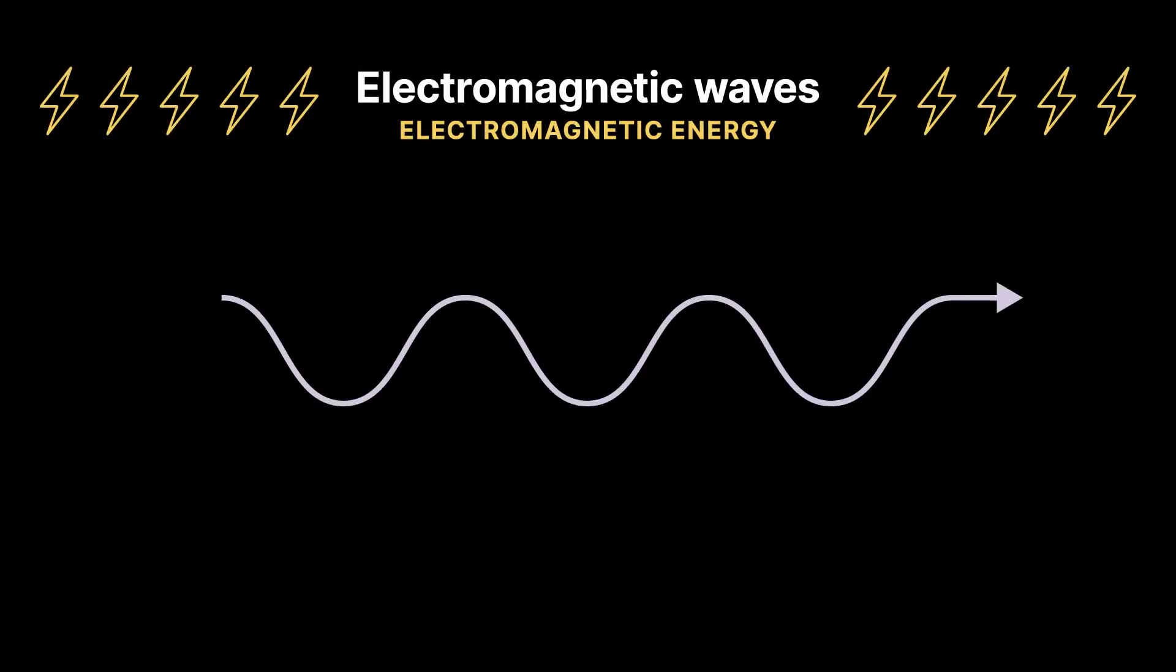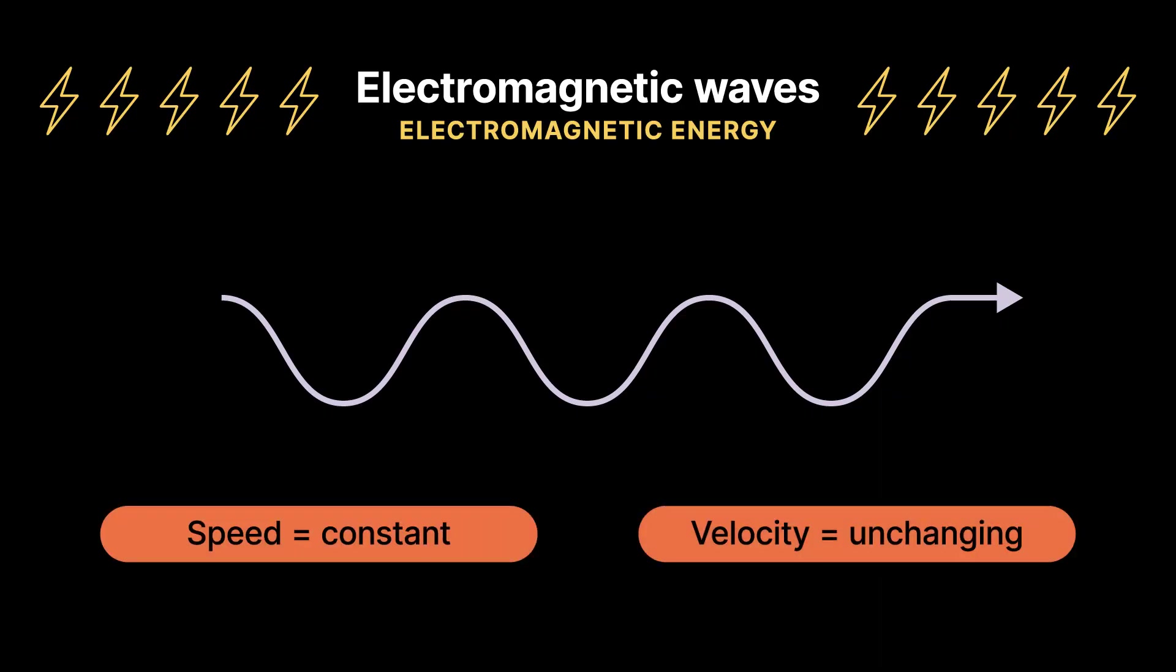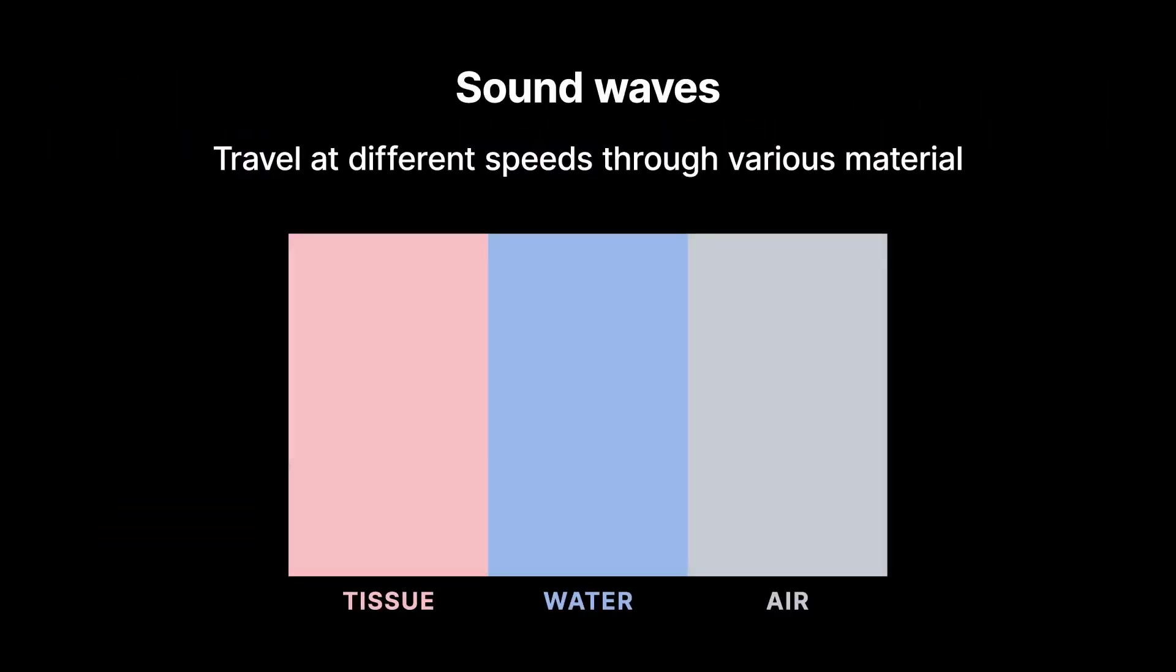These differences in how the waves propagate and travel is key to how ultrasound imaging works. Since electromagnetic waves are self-propagating and don't require a medium through which to move, the speed of electromagnetic waves is constant. Their velocity never changes. They always move at the same speed. However, sound does require a medium and it travels at different speeds through various materials and tissues. The speed of sound waves changes depending on the medium's density and elasticity, which we will discuss in more detail in another lesson.